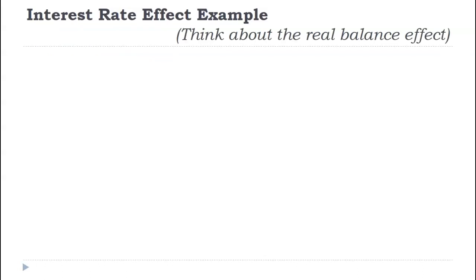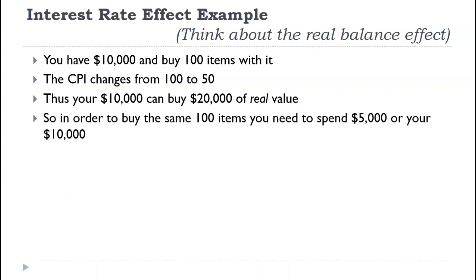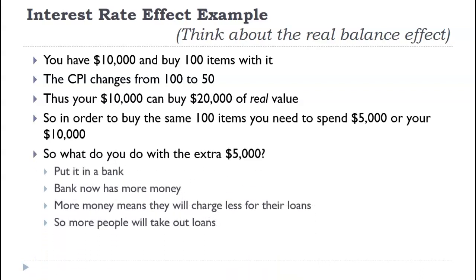Second reason, interest rate effects. I don't like this as much as far as the use for aggregate demand curve, because it starts with, well, let's remember the real balance effect. But, it does have its purpose. So, let's talk about this. First, an example, you have $10,000, and with that $10,000, you can buy 100 items. So, if the CPI changes from 100 down to 50, my $10,000 can effectively buy $20,000 of real value. Here's the thing. Households don't actually typically buy that much more when there's a change in the price level. You buy about the same amount of groceries. You travel about the same amount for gas. You buy about the same amount.